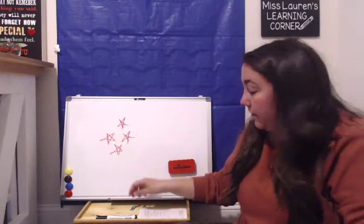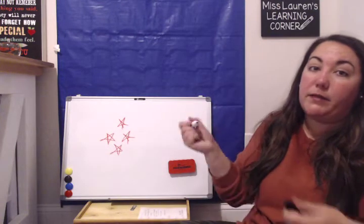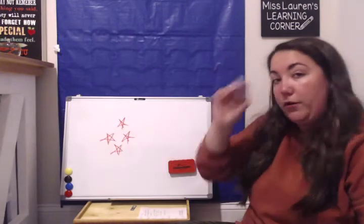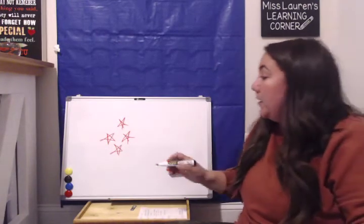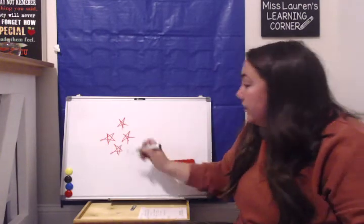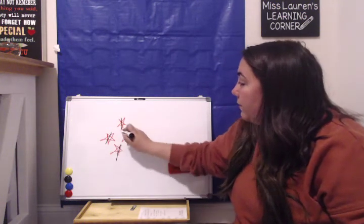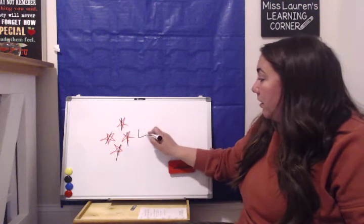How many stars did I make? Let's count them by crossing them out. You can put a cross through them like that, or you can put an X if you want. But don't forget to count. 1, 2, 3, 4. 4 stars.